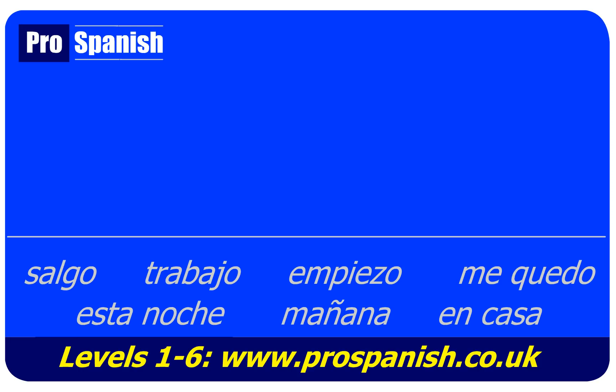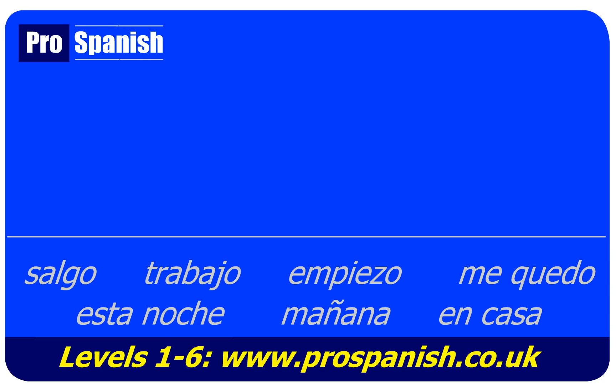How about 'I'm working with Maria tonight'? That's not exactly a plan, but it is an arrangement, and we use '-ing' for this kind of future in English, so we can use the simple present in Spanish. The word for 'with' is con. So: trabajo con Maria esta noche.